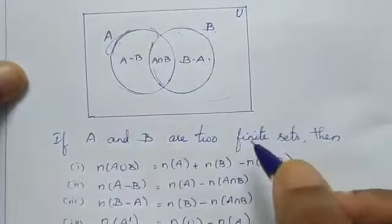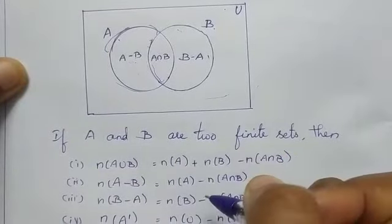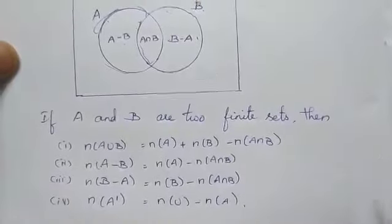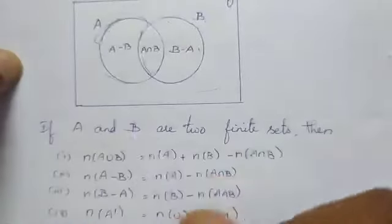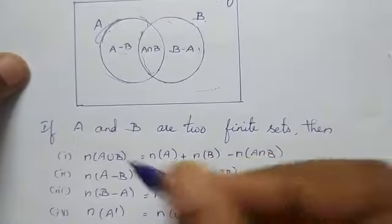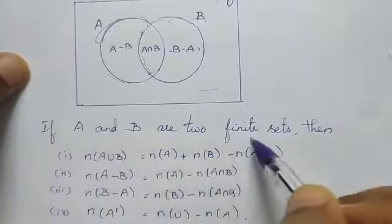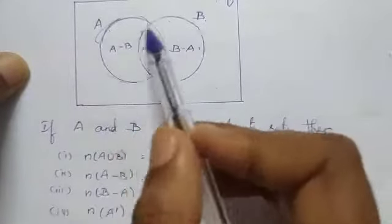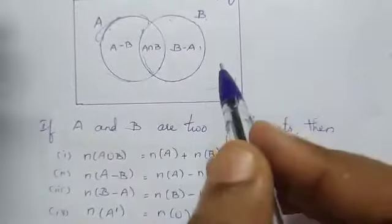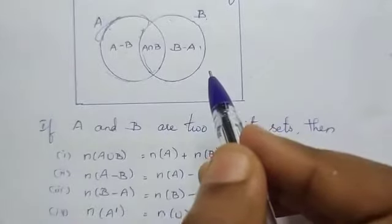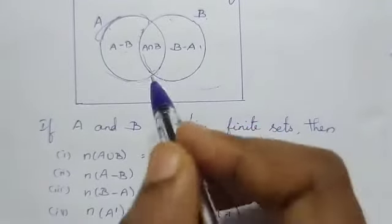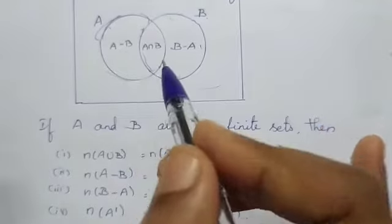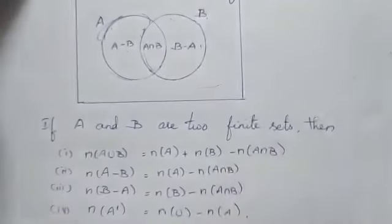See here, some results you have. You must know these results. Using this diagram, try to learn these results. If A and B are two finite sets — what is the meaning of finite? The elements which are present inside the set that you can count. That is a finite set.